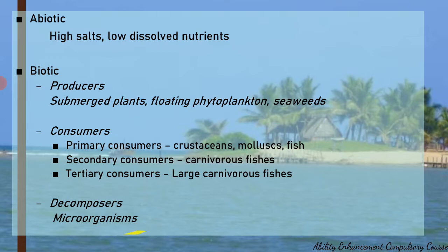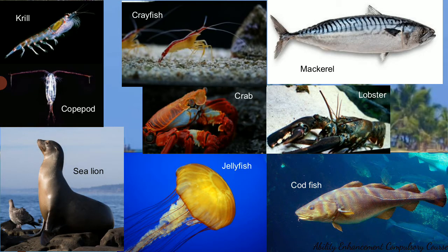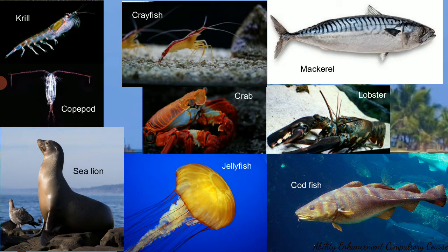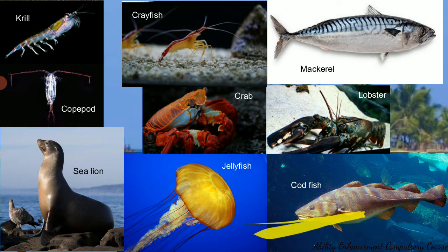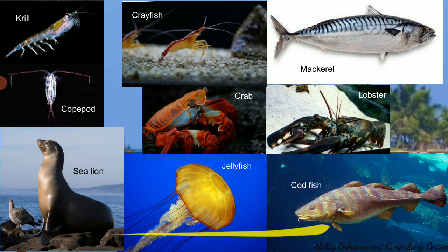Decomposers are the various microorganisms found in the marine water ecosystem. Examples of primary consumer crustaceans include krill and copepods. Crayfish can be either a primary or secondary consumer, having a varying nutritional mode. Crabs and lobsters are secondary consumers. Sea lions, jellyfish, and codfish comprise the tertiary consumers.